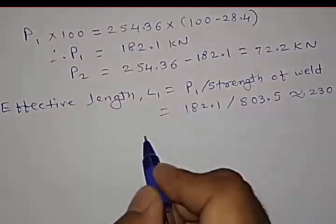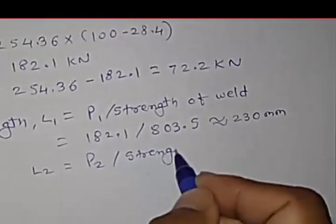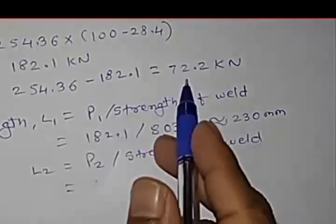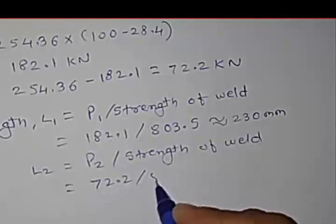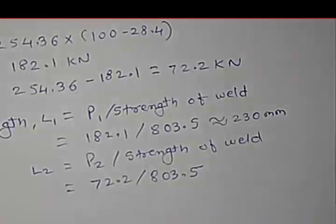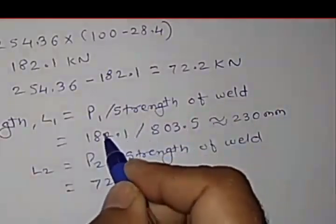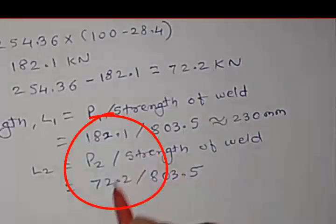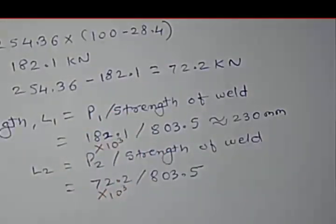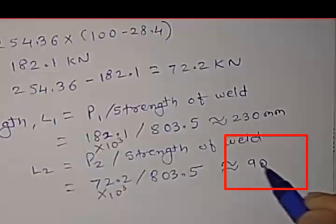While L2 would be equal to P2 divided by strength of the weld. P2 you got 72.2 divided by 803.5. And this is to be multiplied by 182.1 into 10 raised to the power 3, this is also into 10 raised to the power 3. So you will get this around 90 mm.